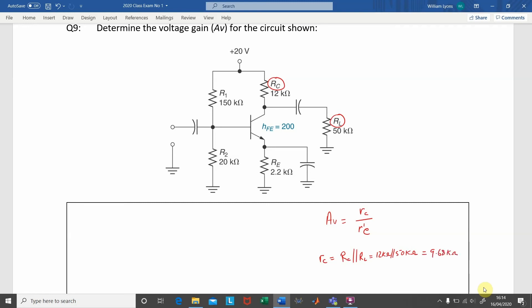So, in our voltage gain formula, we can write out a value of 9.68 kOhms for RC, or the AC collector resistance, and now we have to find the AC emitter resistance, R'E.